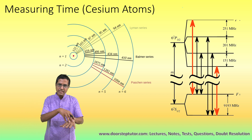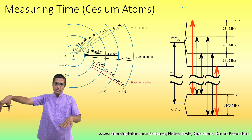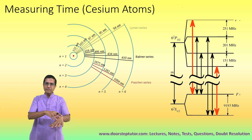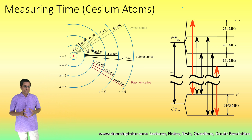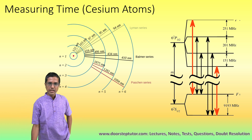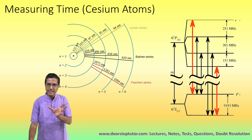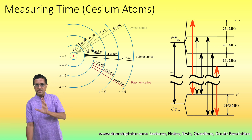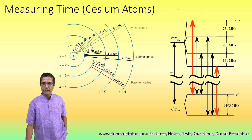All other measurements use this basis as a reference. In the case of time, we have defined our basis to be the frequency of a very particular light emitted by cesium atoms — cesium-133 atoms specifically emit a very specific frequency of light.